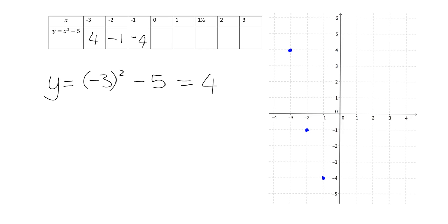Put in 0, we're going to get 0 minus 5, which is going to be negative 5. And so I can plot this point here, when my x value is 0, my y value is negative 5.